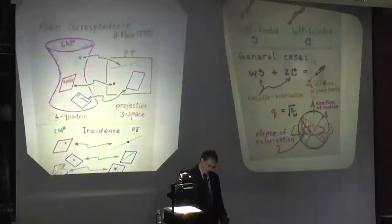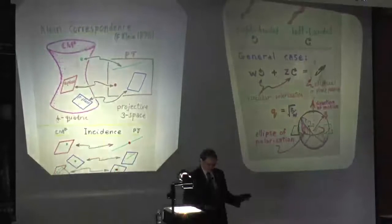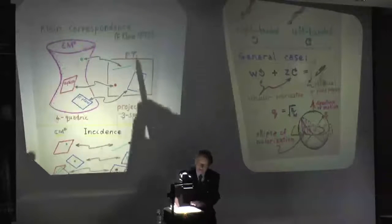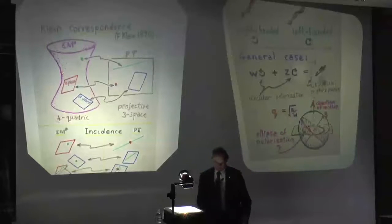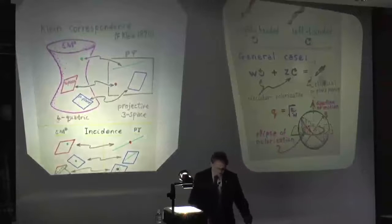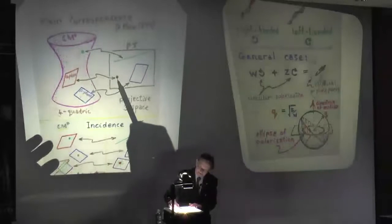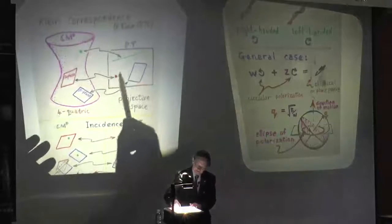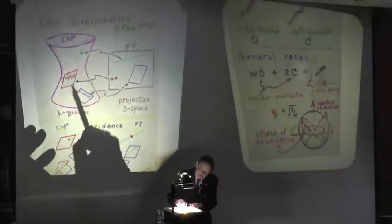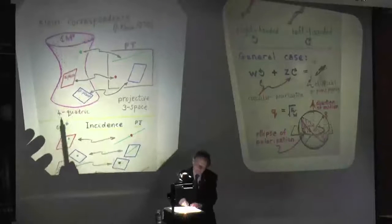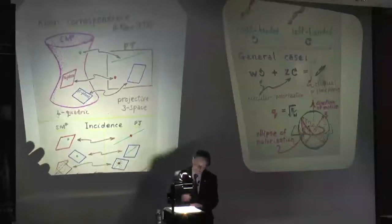For those who are mathematically in the know: if you know what the Klein correspondence is, it's twistor theory. Klein had it before 1870, and I think Sophus Lie had it even before that. What we have is a point in twistor space — a purely complex thing now — corresponding to something called a four-quadric in projective space. It's a four complex-dimensional space sitting in a five complex-dimensional projective space. This is like your space-time, but complexified — the coordinates which were real numbers before, I now make complex numbers.